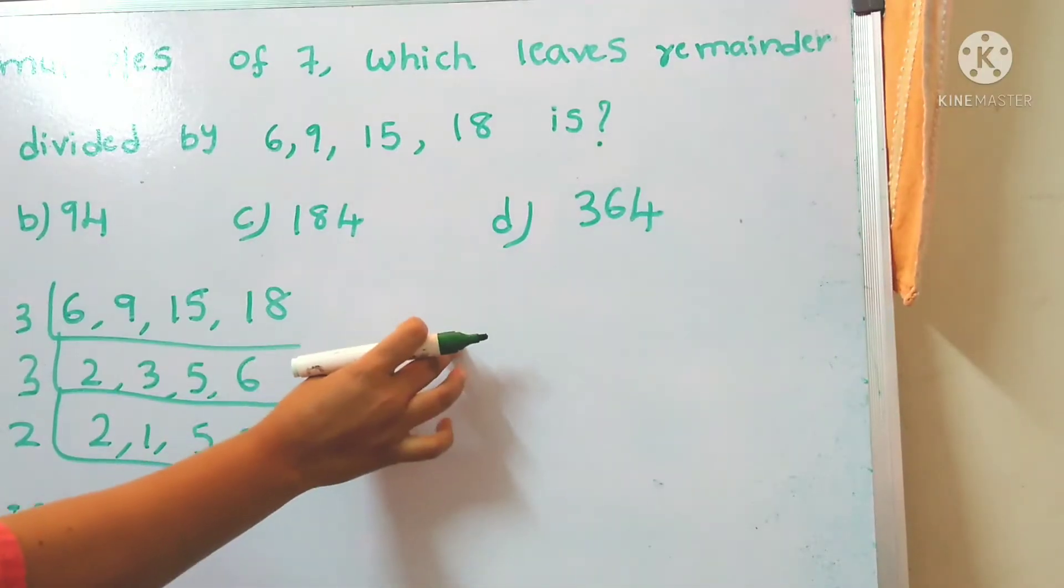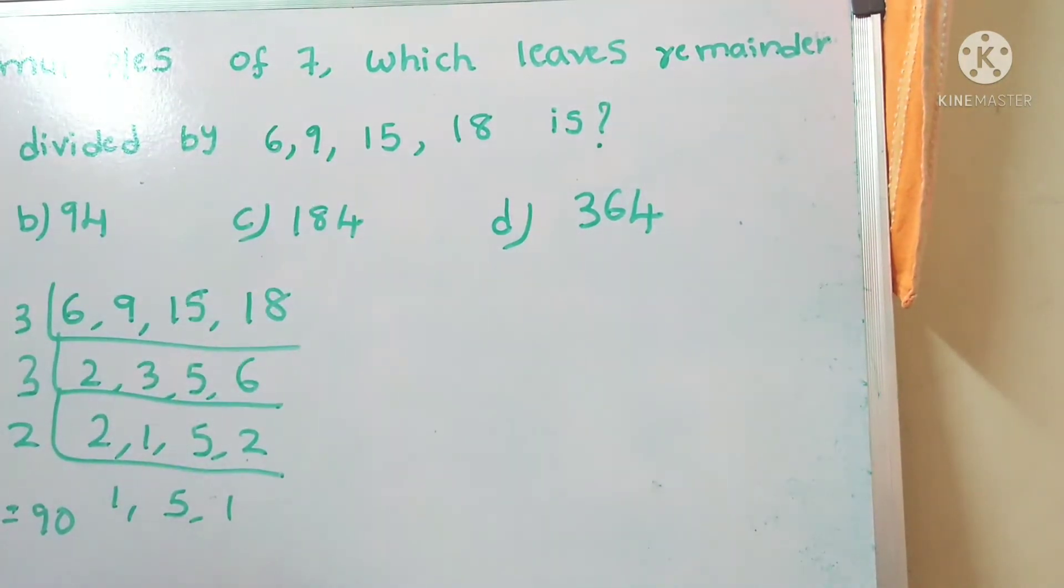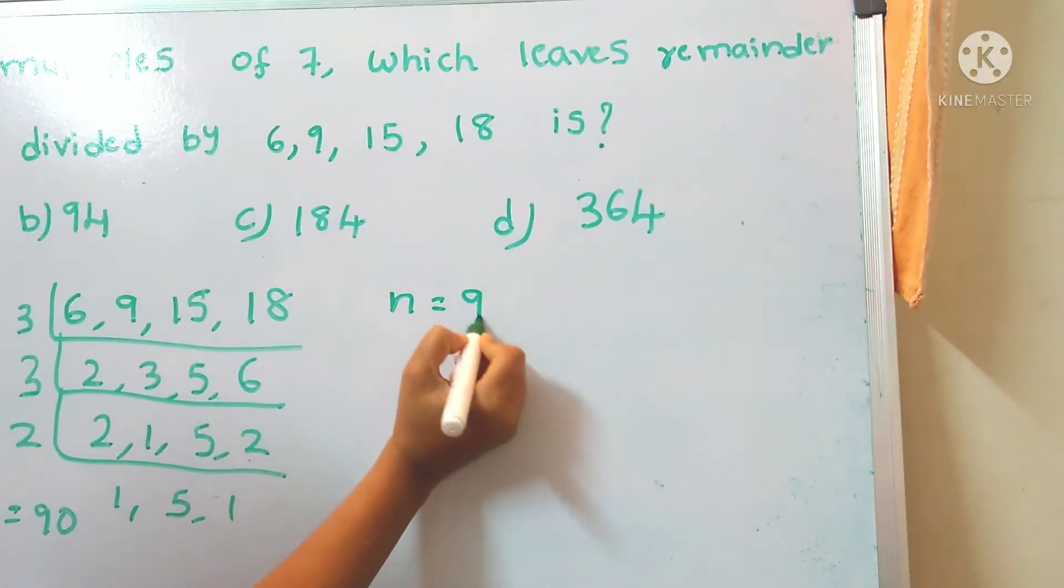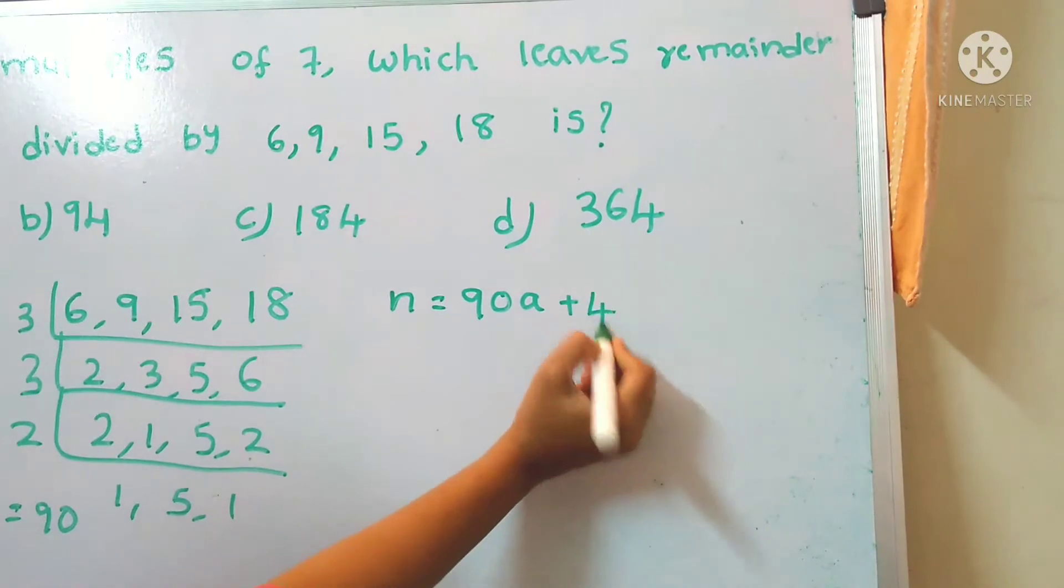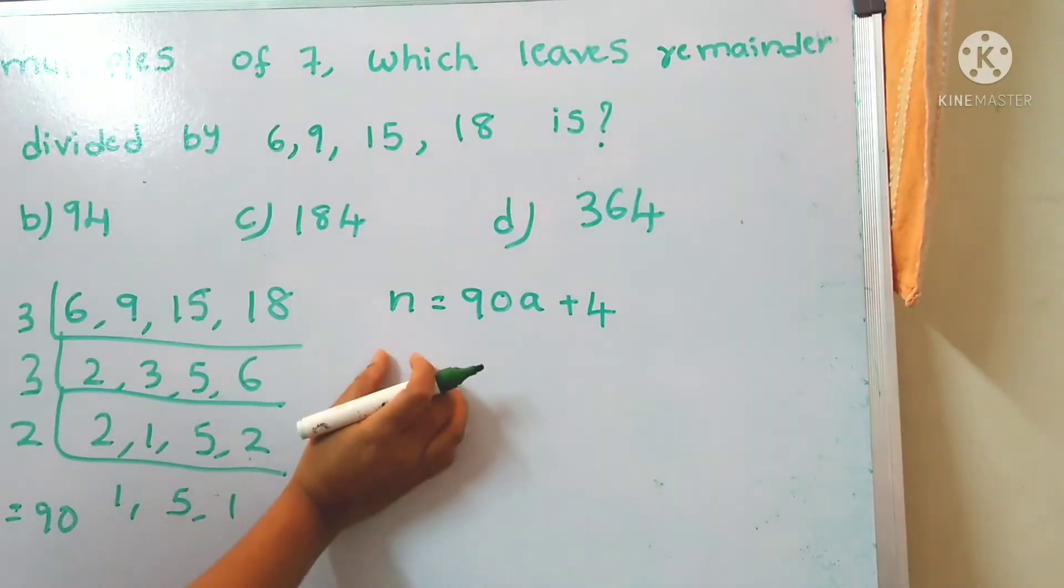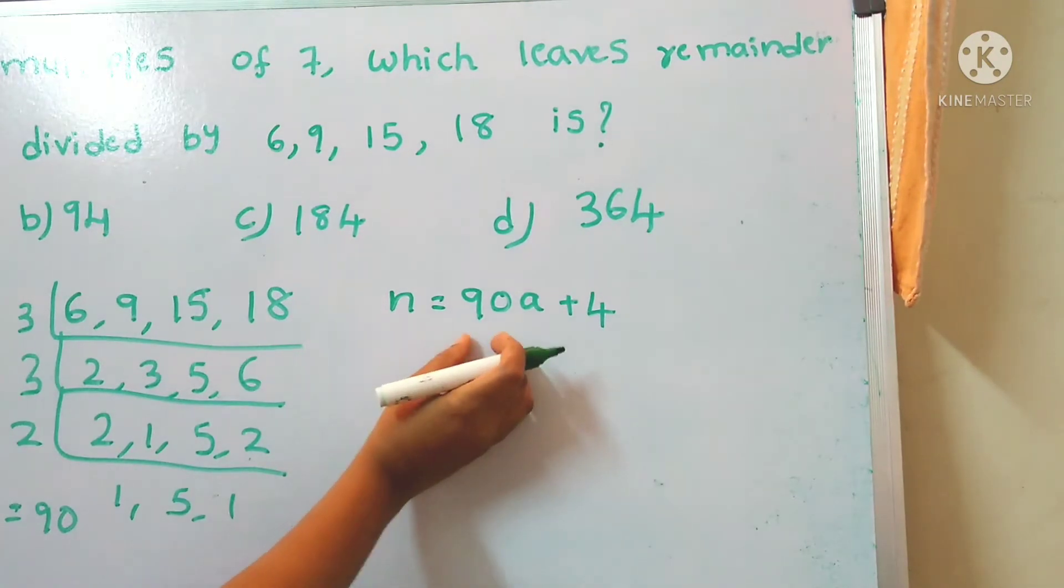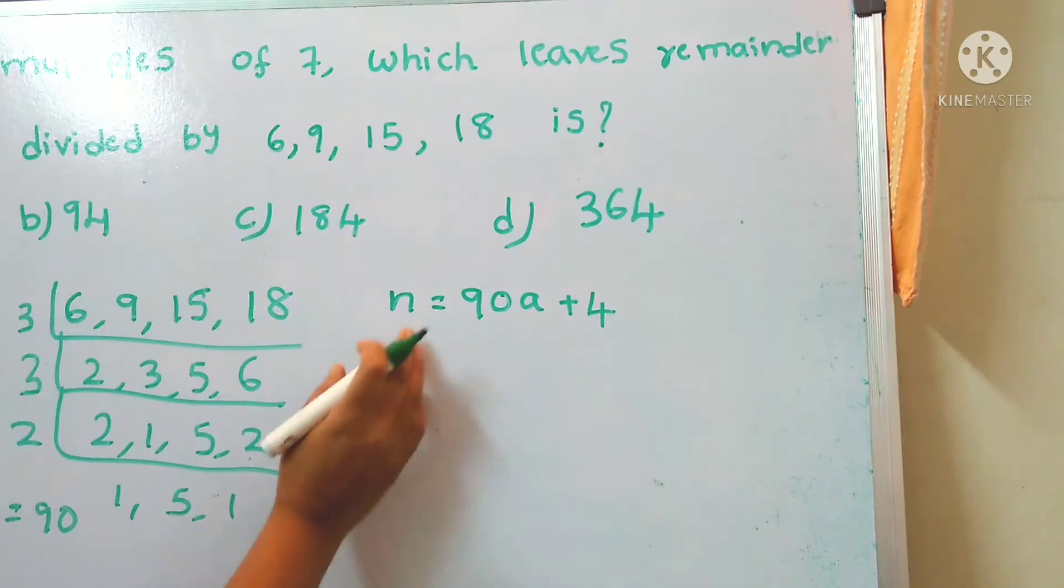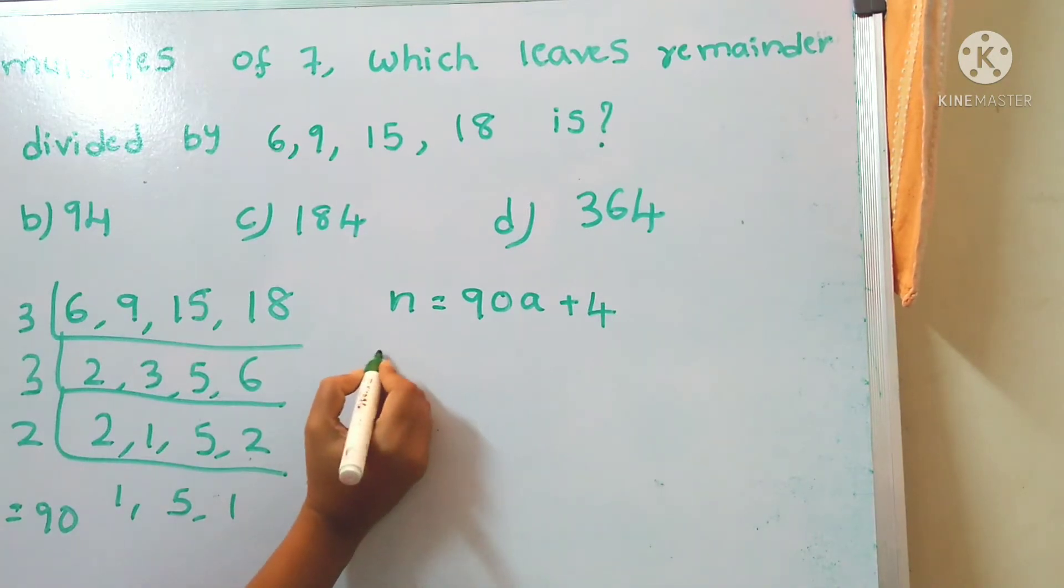Now we have to find out the number that is multiple of 7. The required number n equals to 90a plus remainder, already given that is 4. This equation is in the form of dividend equals to divisor into quotient plus remainder. Here dividend, we need to find out the dividend and quotient. Let's check the values of a.